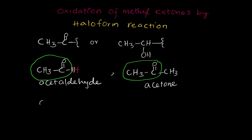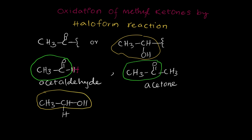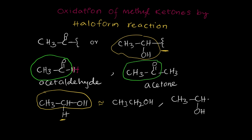Another requirement is CH₃CHOH. Here this CH₃CHOH, with any other group — for example, hydrogen — so this alcohol is simply represented as CH₃CH₂OH, which is ethanol. Otherwise, we can write CH₃CHOH with CH₃. This type of group is also one of the requirements for the haloform reaction.